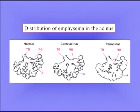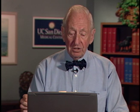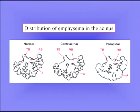In panacinar emphysema we see a different pattern. The pathogenetic process is likely different — it may have to do with an imbalance of the protease/anti-protease system, which we'll be talking about in more detail shortly. This disease may depend on the distribution of blood flow rather than the deposition of pollutants, as in centriacinar emphysema.